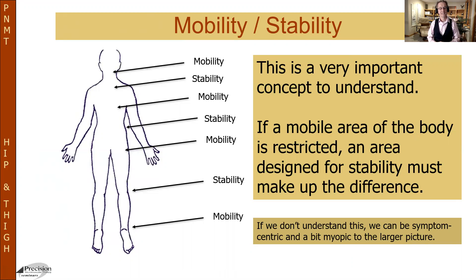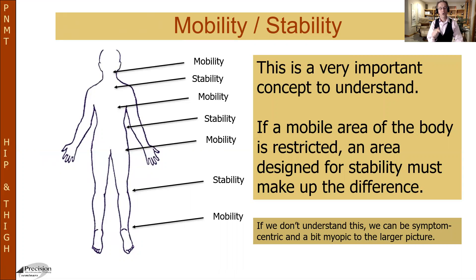Your low back, not so much. Your mid back, very mobile. Your upper thoracics and lower cervicals, quite stable. And your upper cervicals, of course, incredibly mobile. Here's the thing: if you lose mobility in one of the areas that should have it, then you have to make up for it somewhere else — and nowhere is that more true than in the hip itself.